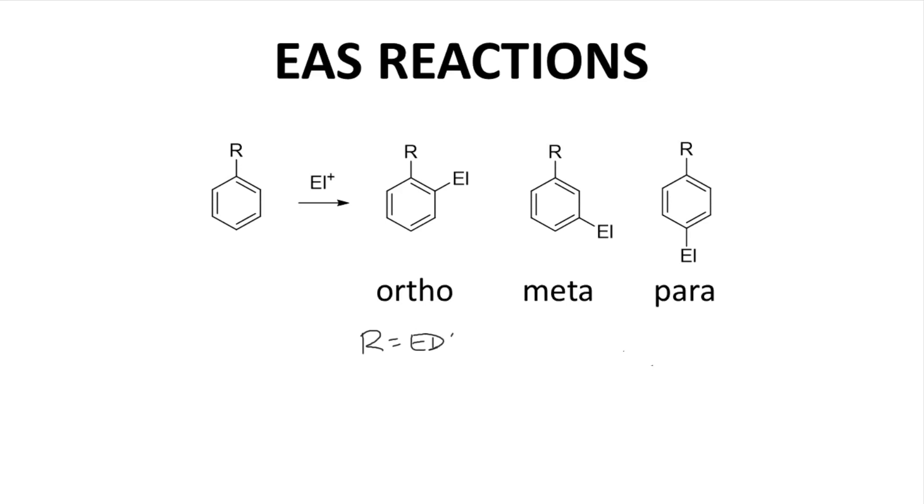If the R group is an electron donating group, the carbocation intermediates leading to the ortho and para products are favored, with the para product typically winning out because of steric repulsion in the ortho product.